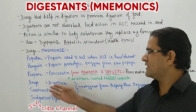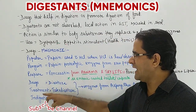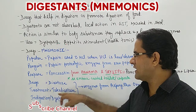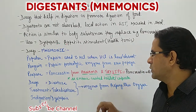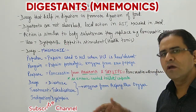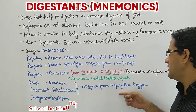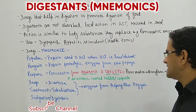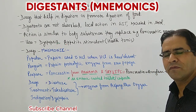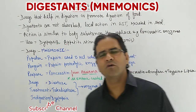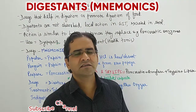The next drug is diastase — T stands for takadiastase. These two drugs, diastase and takadiastase, are obtained from Aspergillus. This is how to remember the digestants.